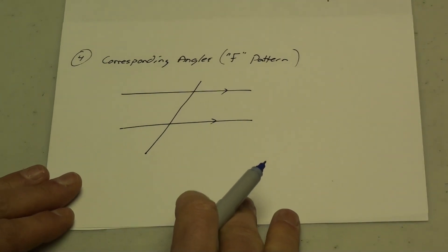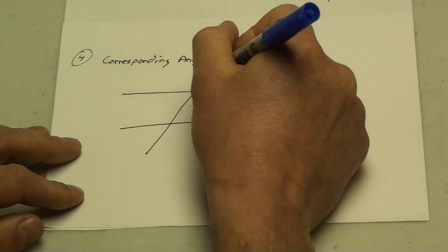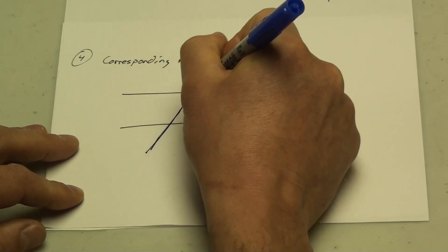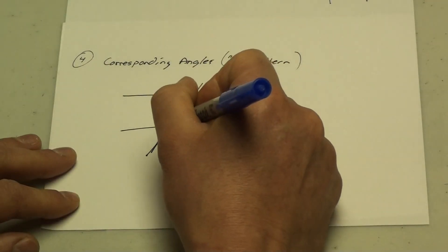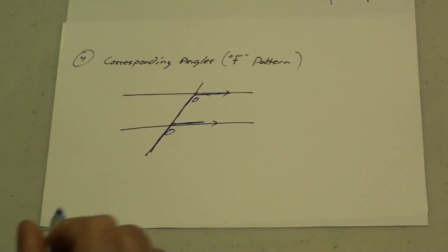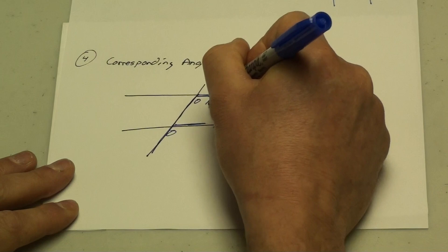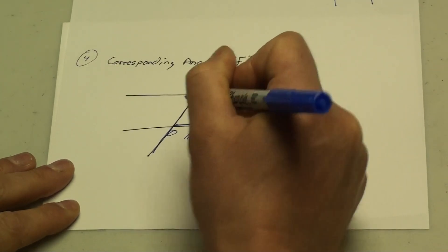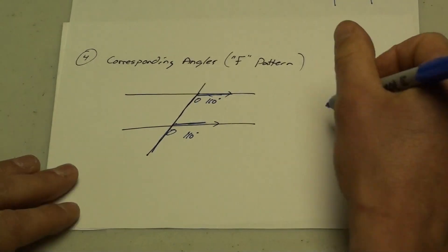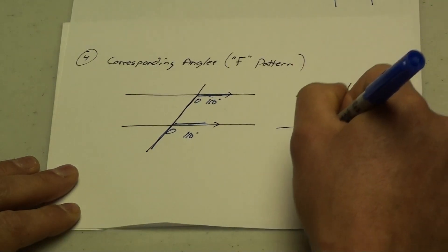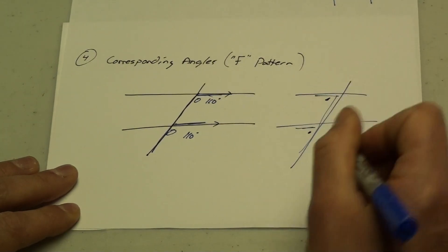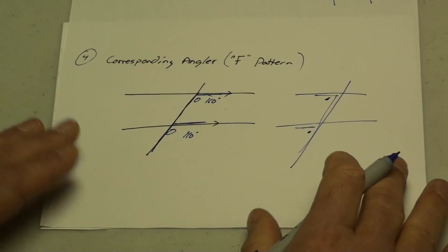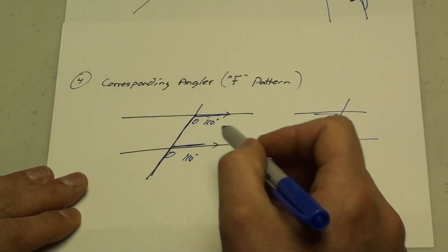Next is corresponding angles, which are formed by the letter F. Taking my parallel lines, I have the letter F right here. In the letter F, this angle and this angle will both be equal to each other. So if this one is 110 degrees, the angle down here will also be 110 degrees. That letter F could also be made going in different directions — maybe it's going backwards — in which case those two angles would again be equal to each other. So we have alternate angles equal to each other, and corresponding angles that are also equal to each other.